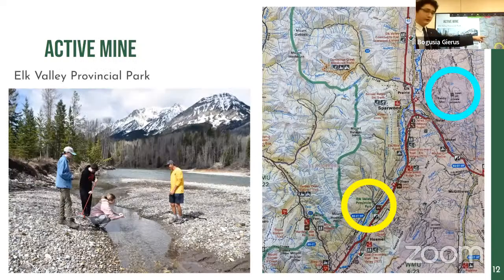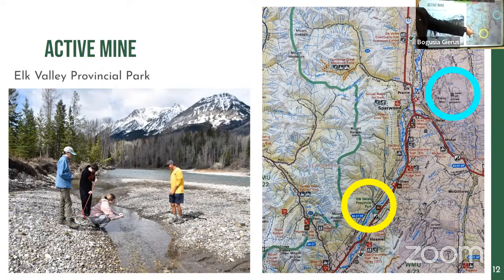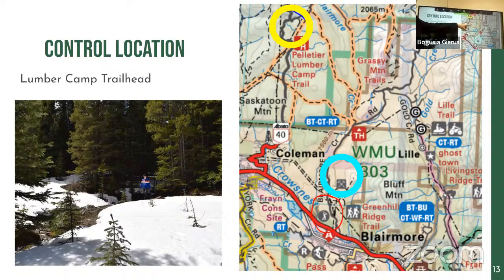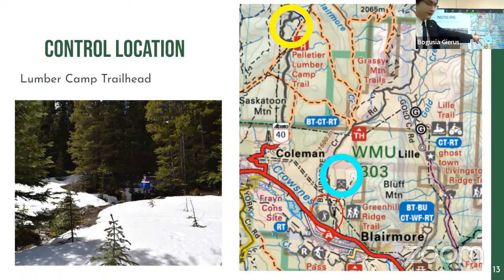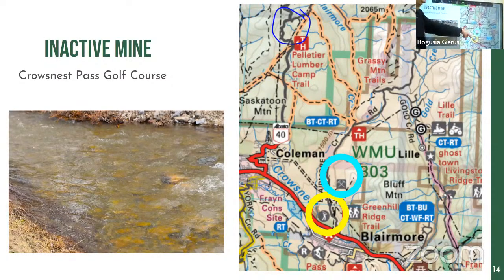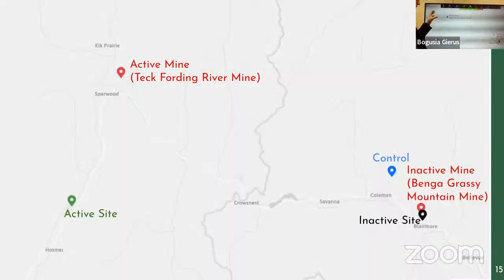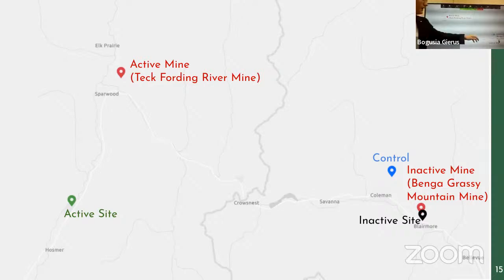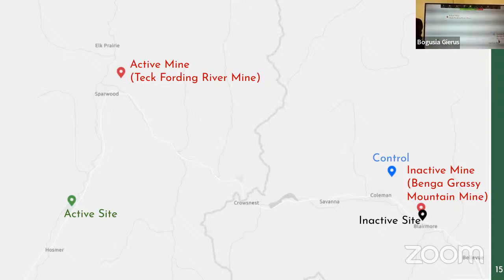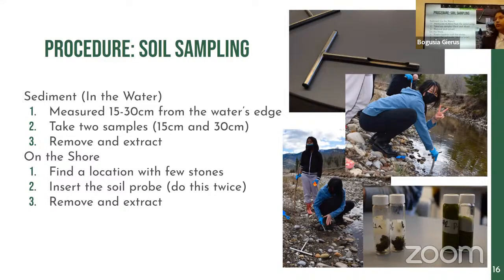This map shows the first mine — the blue circle indicates the mine location and the yellow circle shows where we sampled, downstream from the mine. For the second mine, the upper yellow circles show where we took the upstream control sample, and the lower yellow circle shows where we took the downstream sample from the inactive mine. In comparison: the active mine was at the top, our active mine sample location, then the control location, the inactive mine, the downstream inactive sample, and the control.